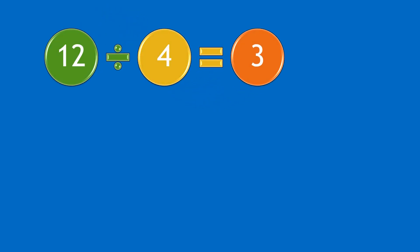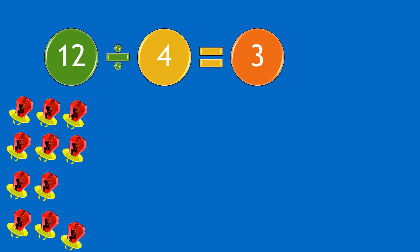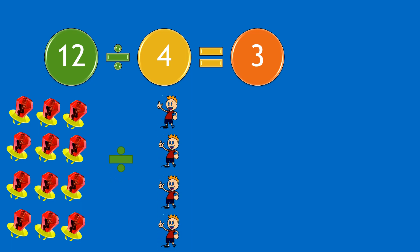Moving on to our next question: twelve divided by four equals three. So if you have twelve ring pops and divide them by four boys, each boy will receive three ring pops.